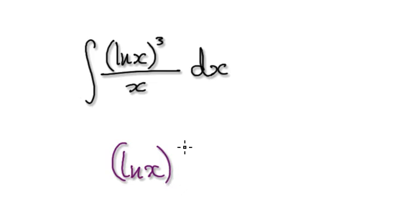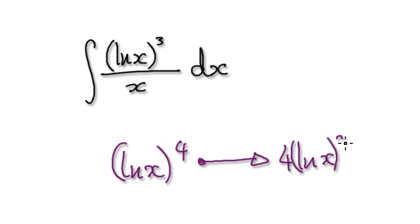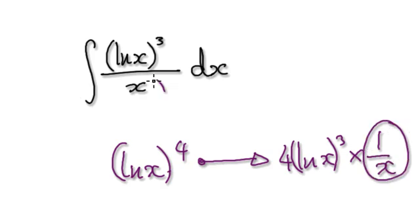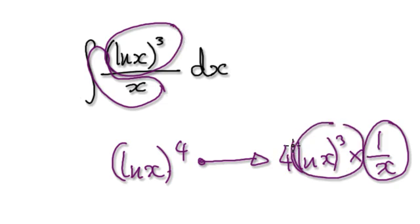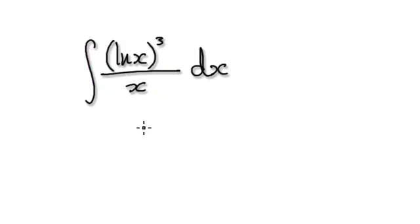Make natural log of x to the power of 4 your initial guess. When you differentiate this, it would be 4 times natural log of x to the power of 3, and then times the derivative of natural log of x, which is 1 over x. You see, this matches up with this, and this matches up with this. So the moral of this question is really to spot that 1 over x is the exact derivative of natural log of x.